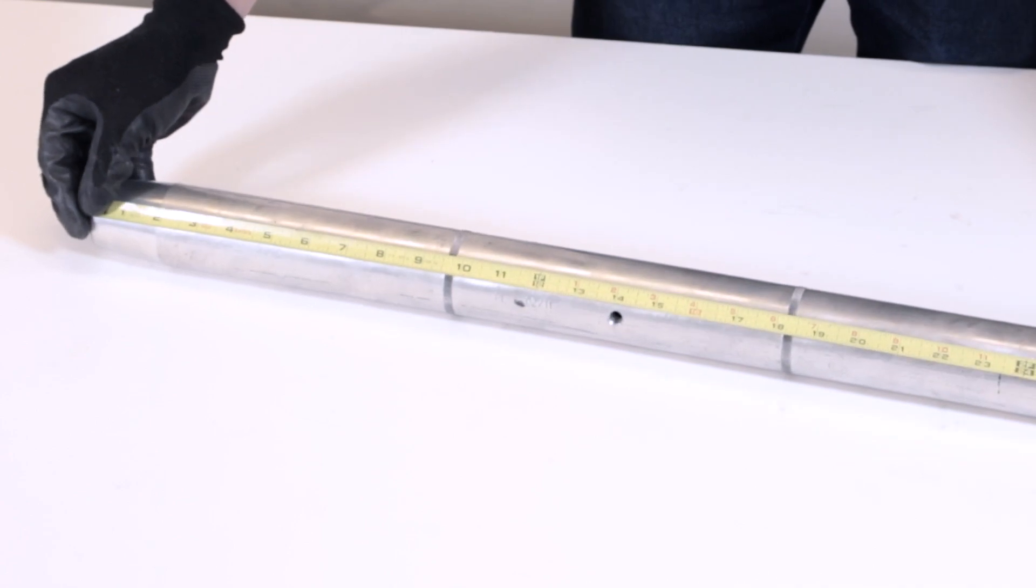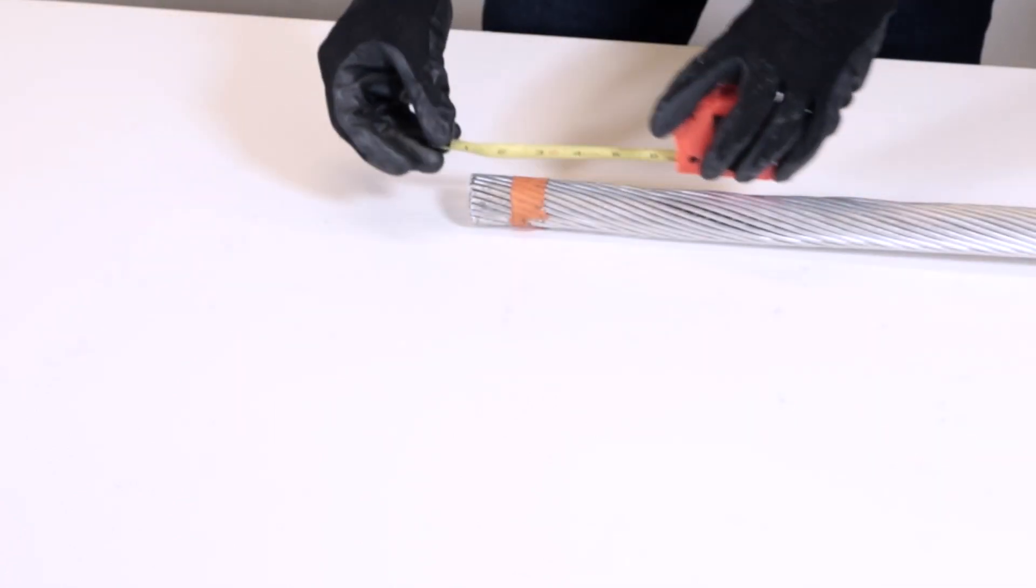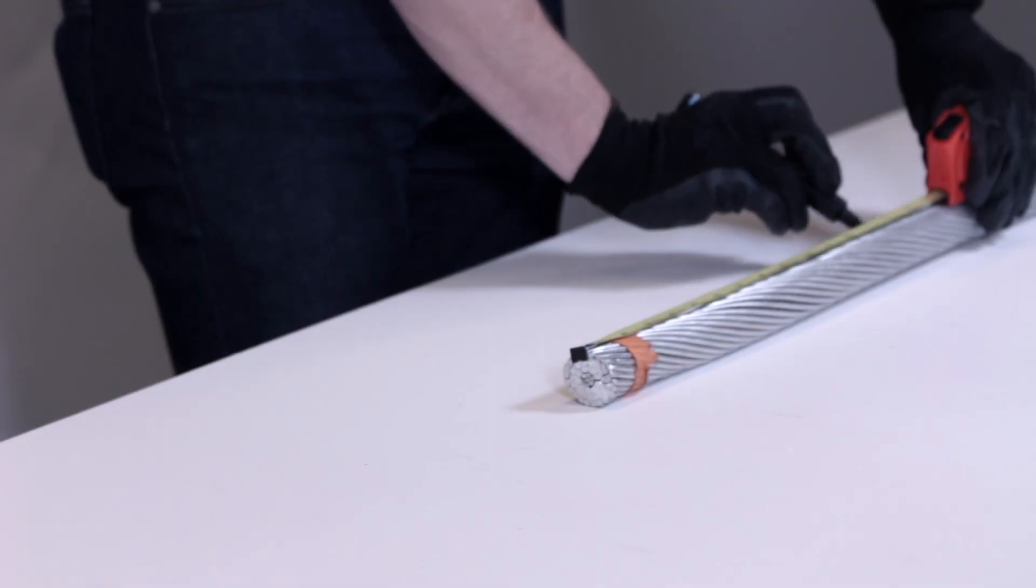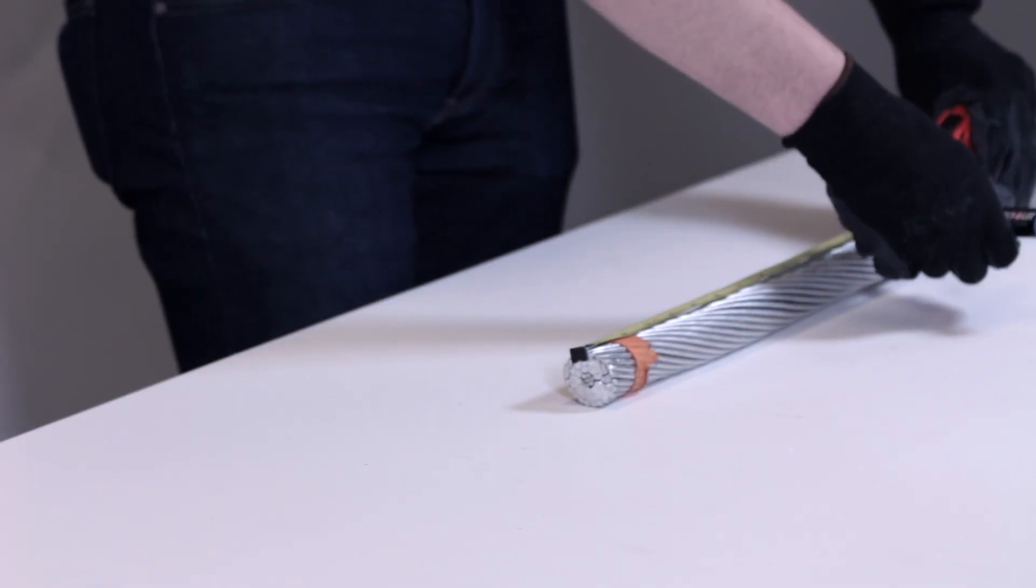Measure the length of the aluminum splice body. Measure and mark half this length on the conductor from the cut strand ends. This mark will be important later when centering the splice.